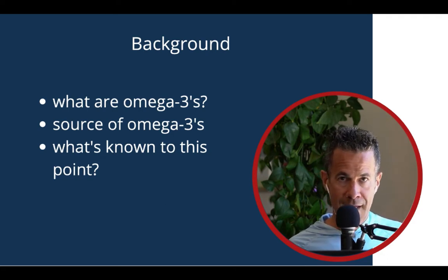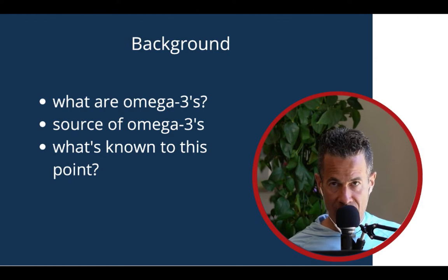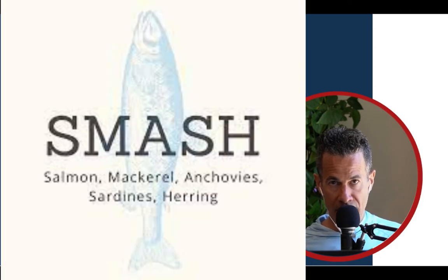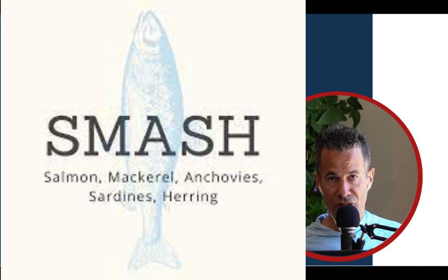EPA and DHA come from foods like—well, I remember them as SMASH-T: salmon, mackerel, anchovies, sardines, herring, and trout.